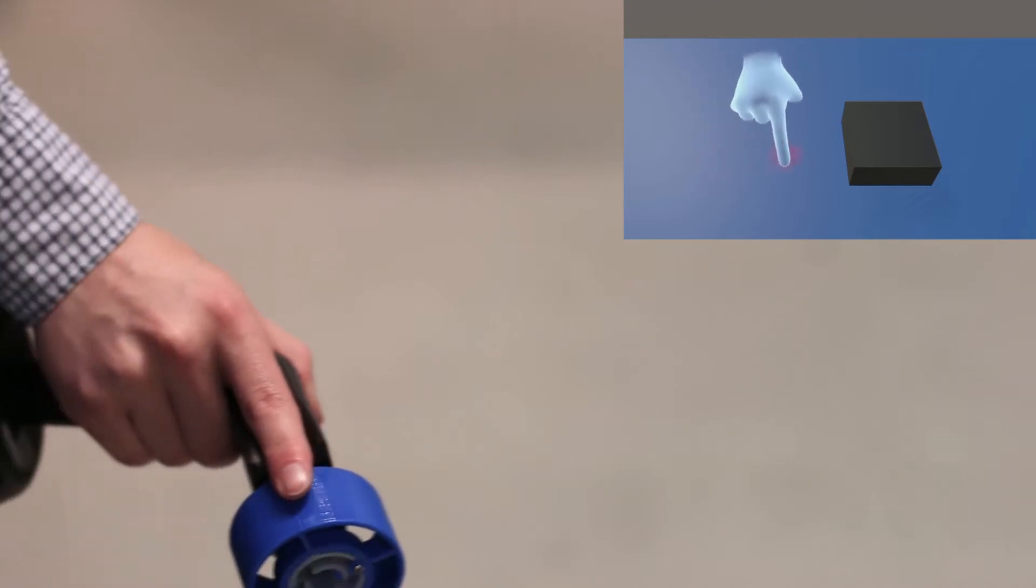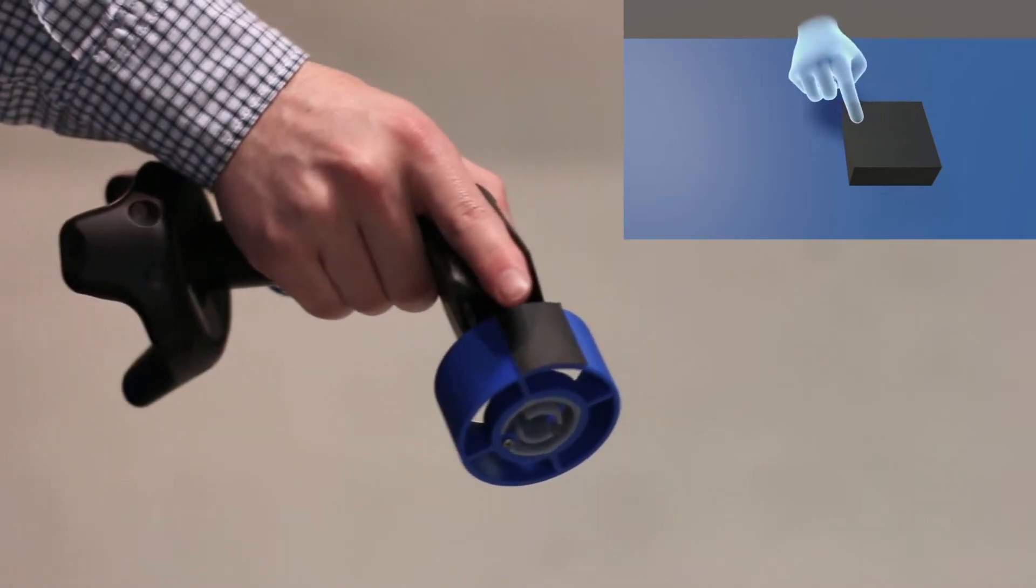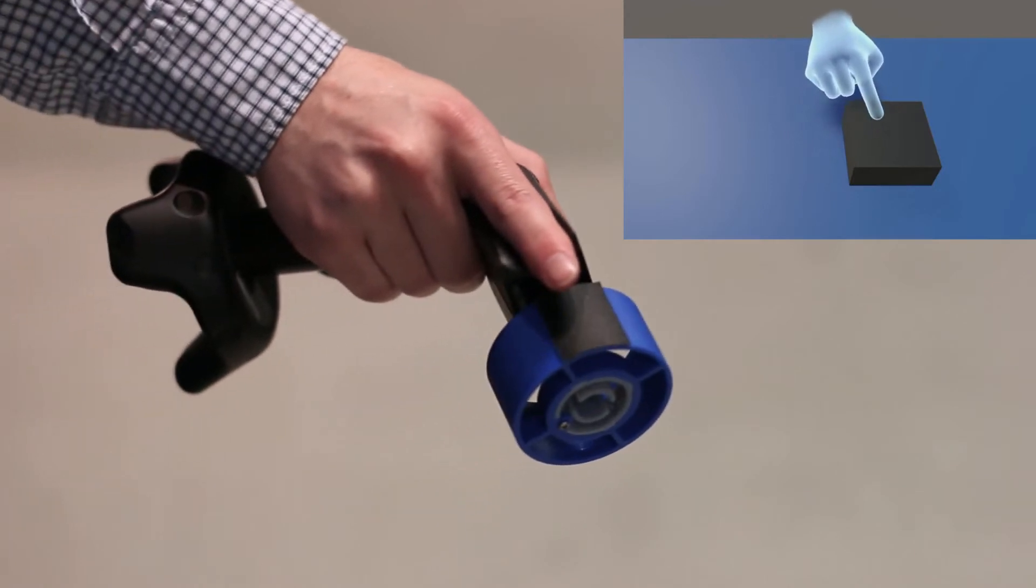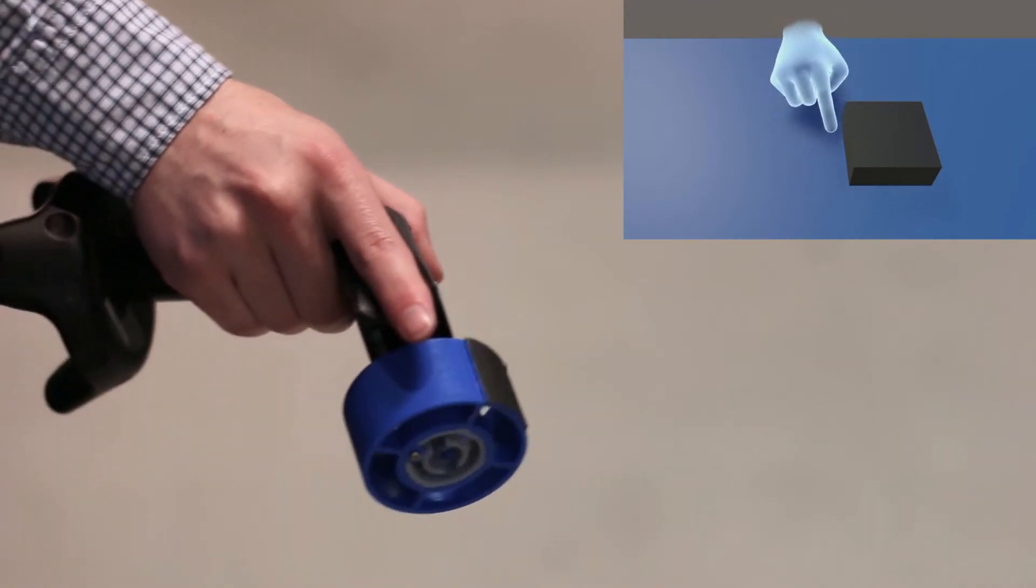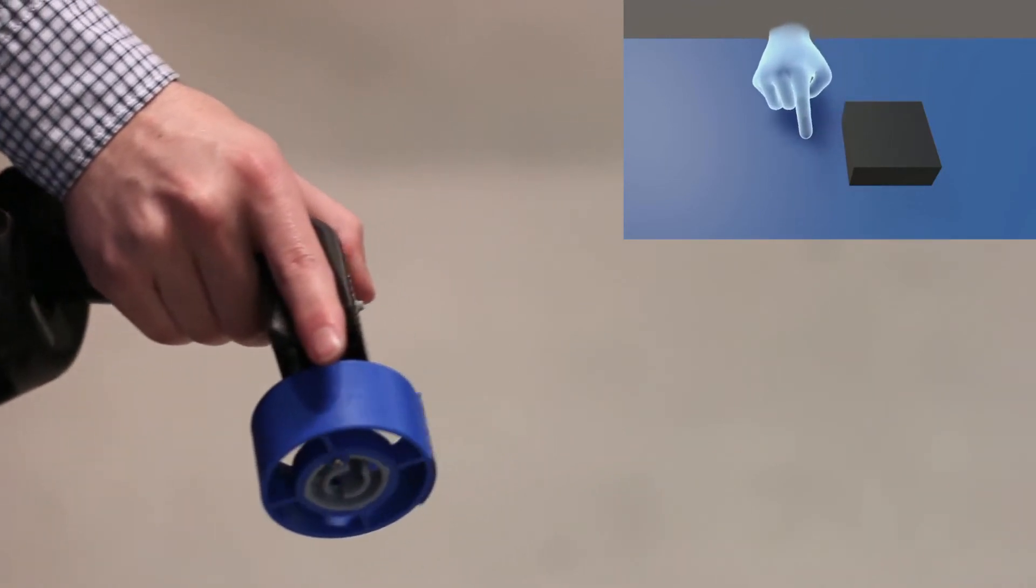Because our device is tracked, we can spatially register haptic elements with the environment. The motor spins the haptic wheel to ensure alignment between the features on the wheel and the virtual scene.